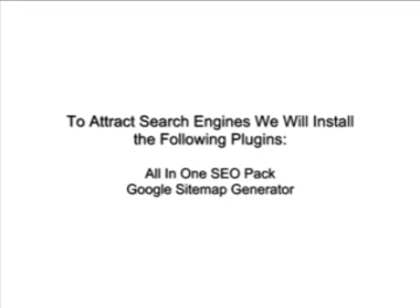The next thing we're going to do is install plugins. Plugins are standalone little programs that you can easily install into WordPress that will add some functionality to it. To make the search engines come to our site easily, we're going to install two plugins: one called All-in-One SEO Pack and the other called Google Sitemap Generator.